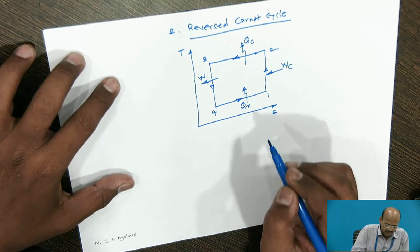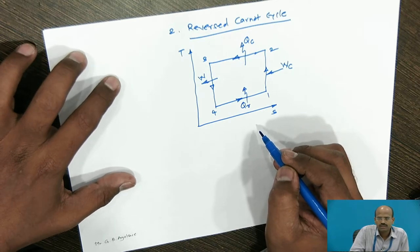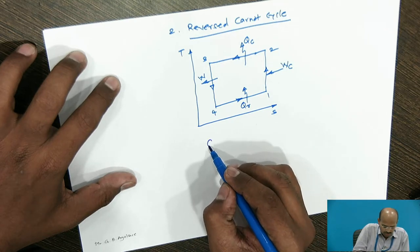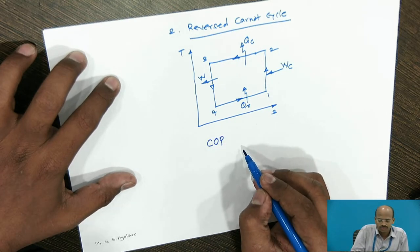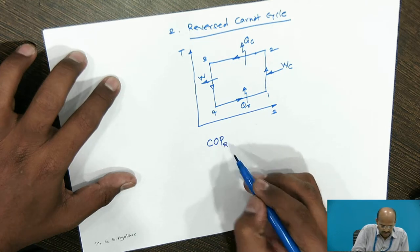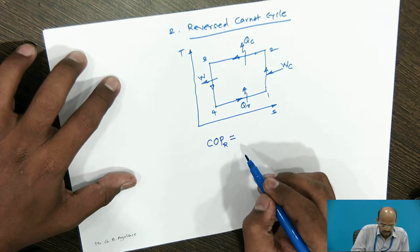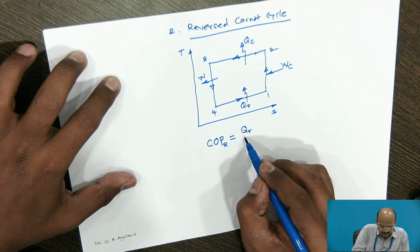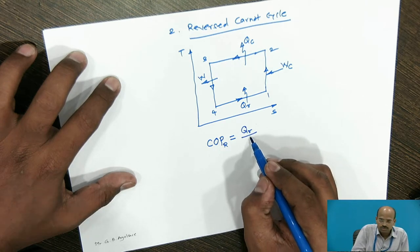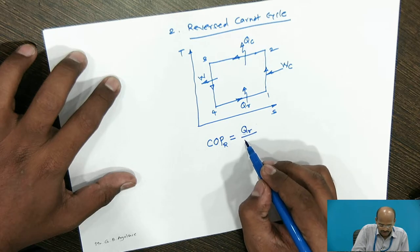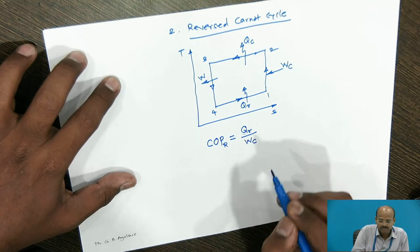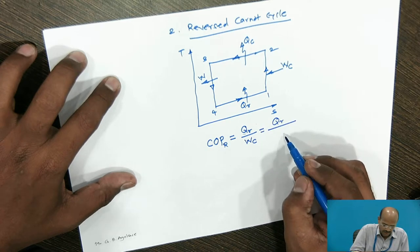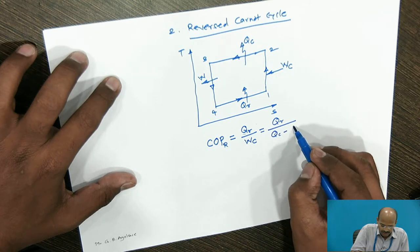Now, in the reverse Carnot cycle, we cannot use the eta-ter for efficiency. Effectiveness is calculated using the term coefficient of performance. And for refrigerator, suffix is written as R. What is the COP? COP is the ratio of desired effect, nothing but refrigerating effect here, to the work done to achieve this effect. How much work is required? That is WC. This can be written as refrigerating effect divided by QC minus QR.